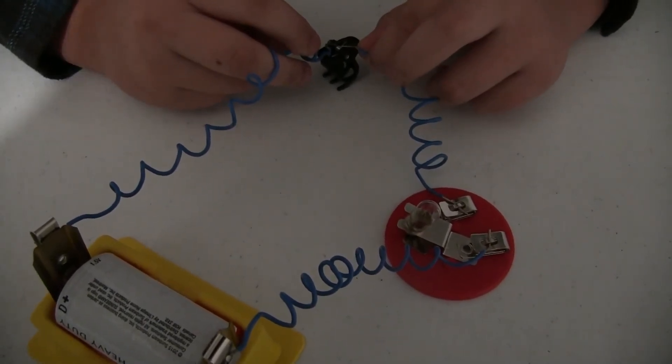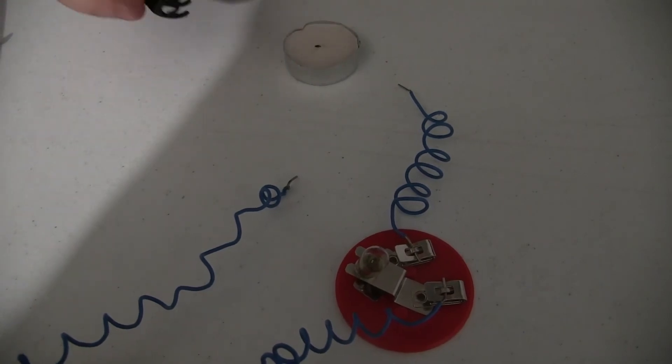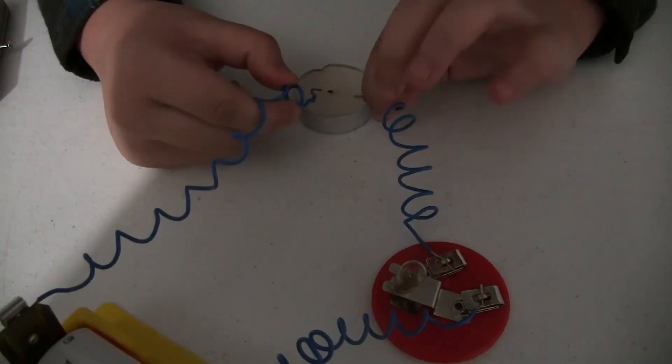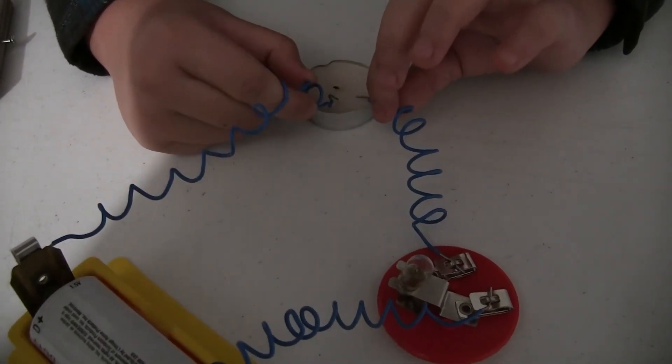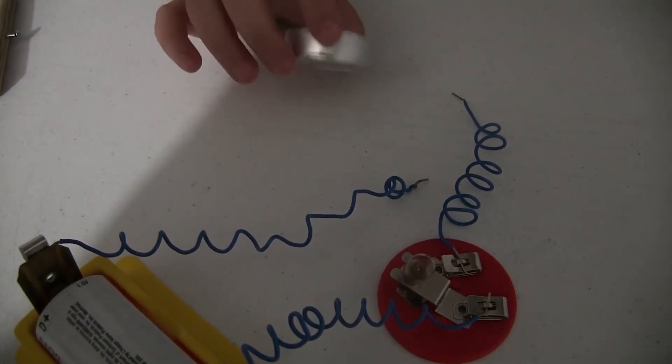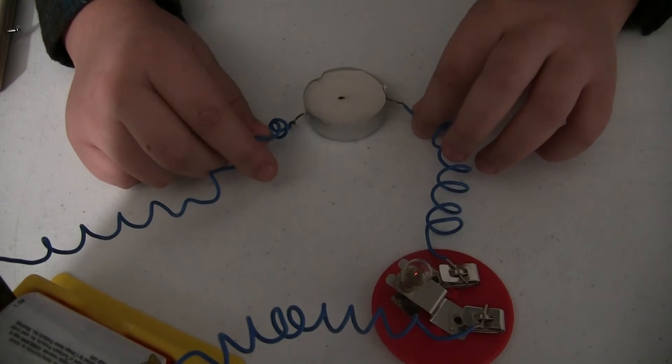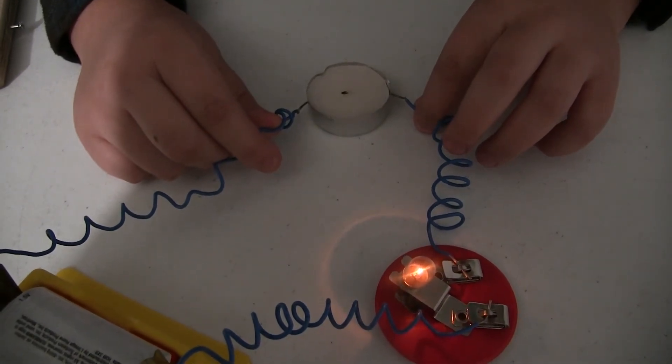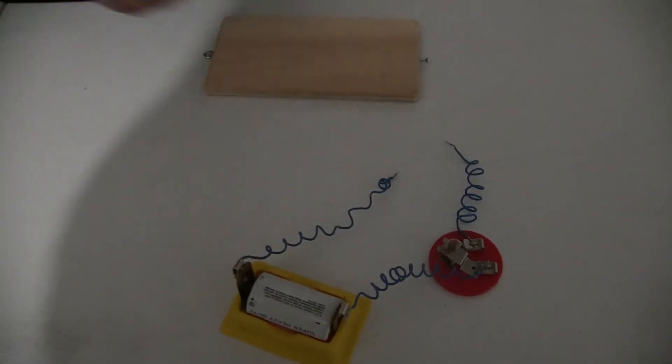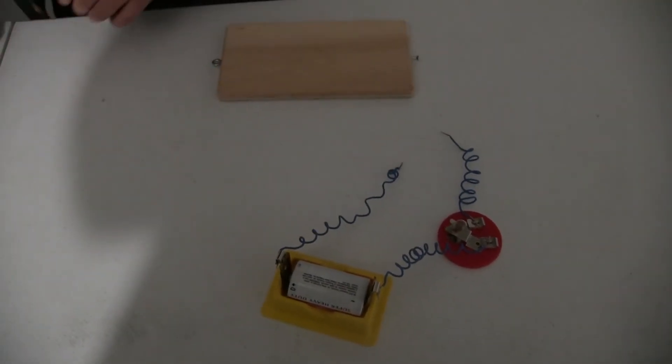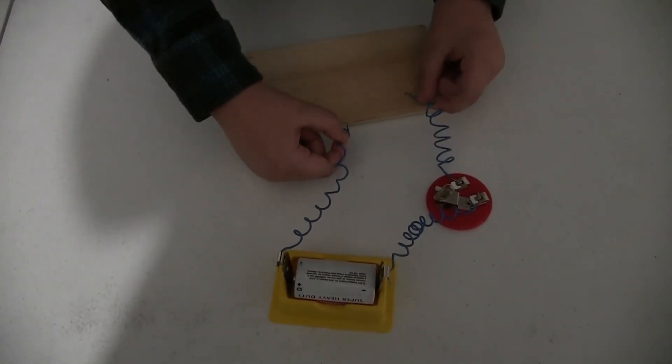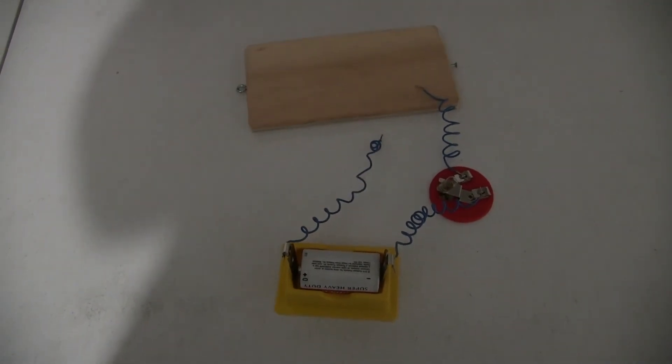So now that we know that the paper clip, the plastic is not conductive and the metal part is, we're gonna try wax and obviously you can tell that wax is not conductive. What happens if we try the aluminum? And there we go, aluminum is a type of metal so it is conductive.